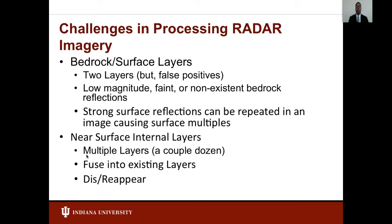There are associated challenges with developing automated methods. For the bedrock surface approach, we are interested in only two layers, but typically these are very faint or non-existent image features. Also, false positives can hinder the correction of an accurate layer. For example, surface reflections can be repeated in an image, which may cause them to be selected instead of the correct surface layer.